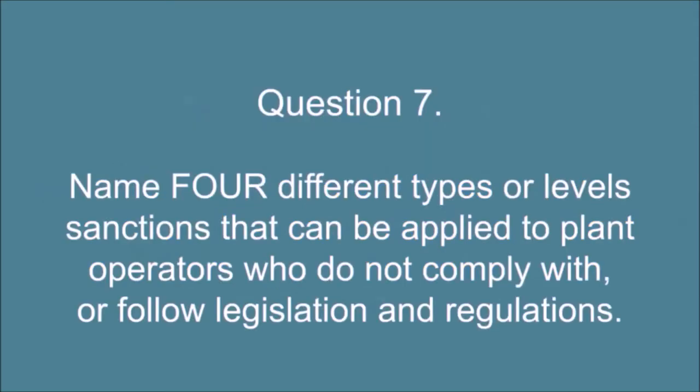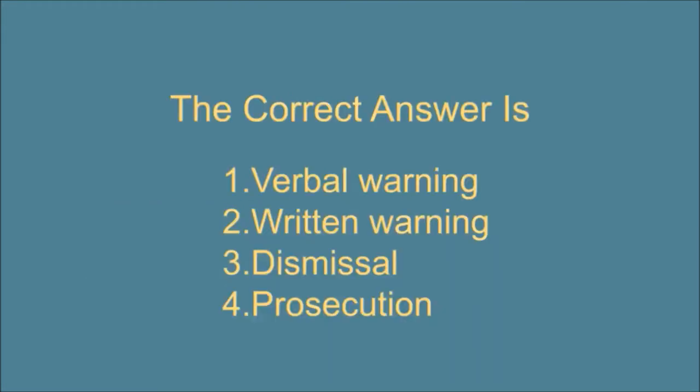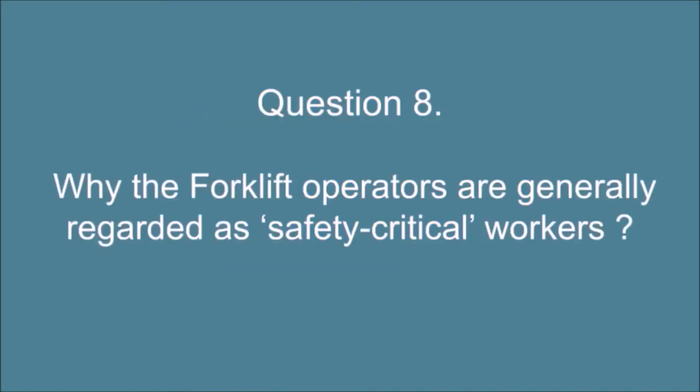Question 7. Name four different types or level sanctions that can be applied to plant operators who do not comply with or follow legislation and regulations. The correct answer is: 1. Verbal warning, 2. Written warning, 3. Dismissal, 4. Prosecution.